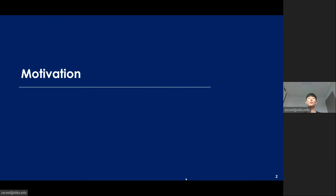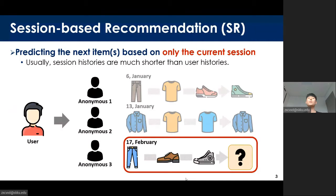First, let me start with the motivation. Session-based recommendation is quite different from traditional recommendation. Session-based recommendation models only use the current session information without user information. User identification is unknown in many services. Session histories are much shorter than user history because a single user history can be divided into multiple session histories. The below is an example: the user history is divided into three anonymous session histories.